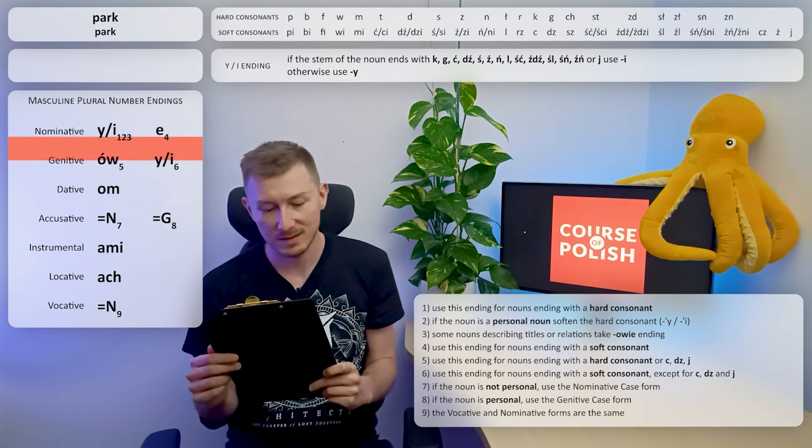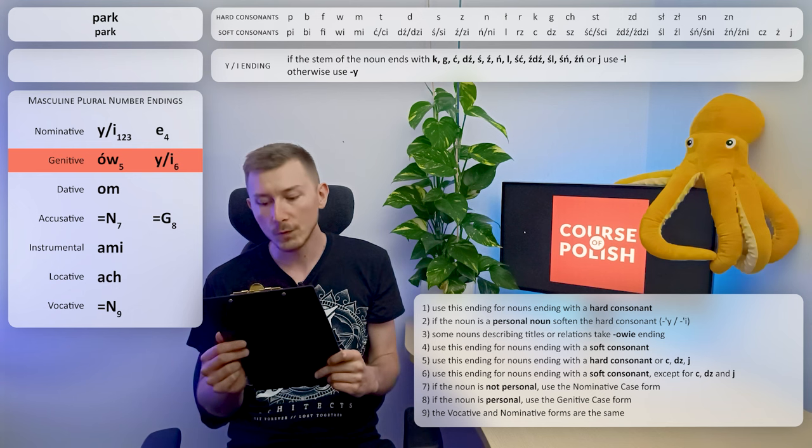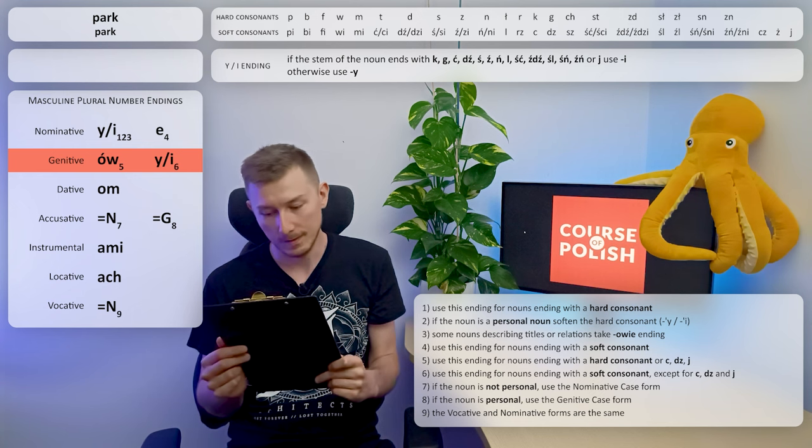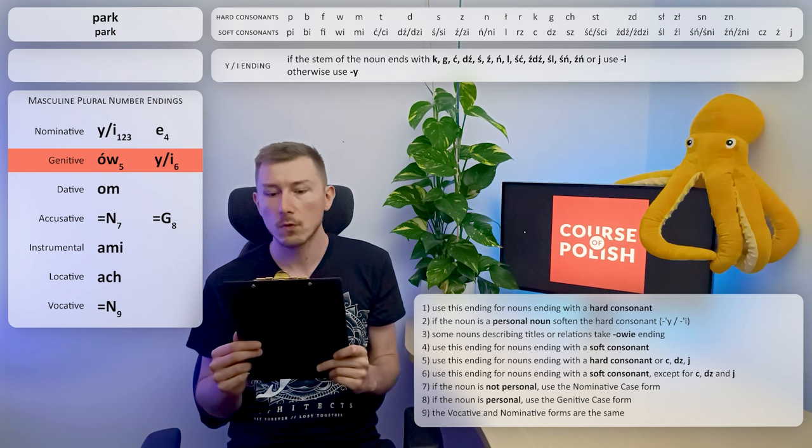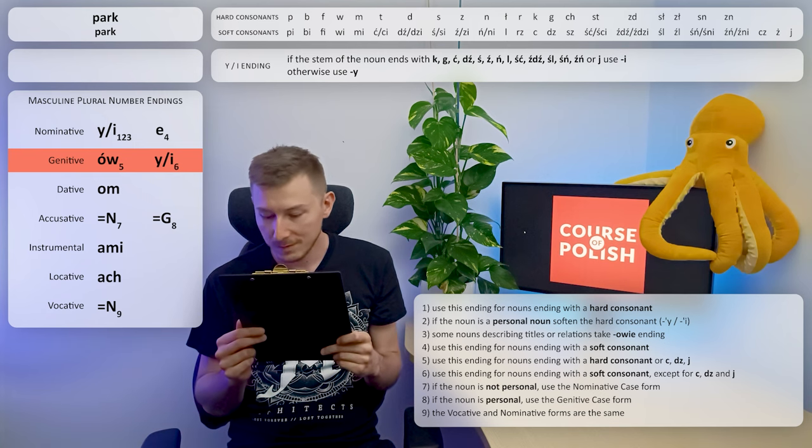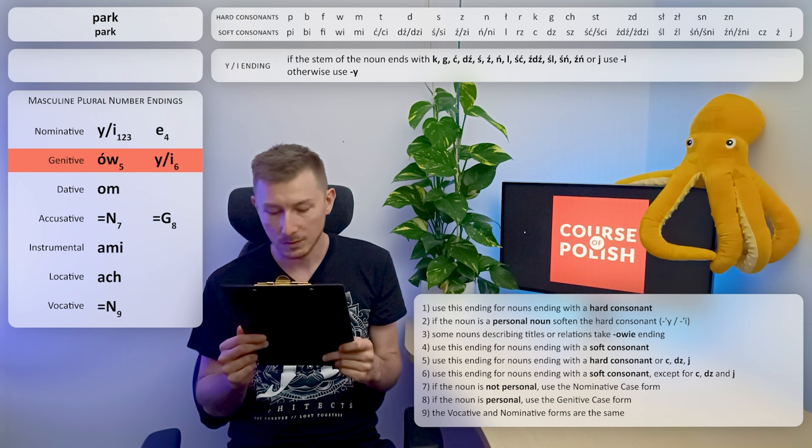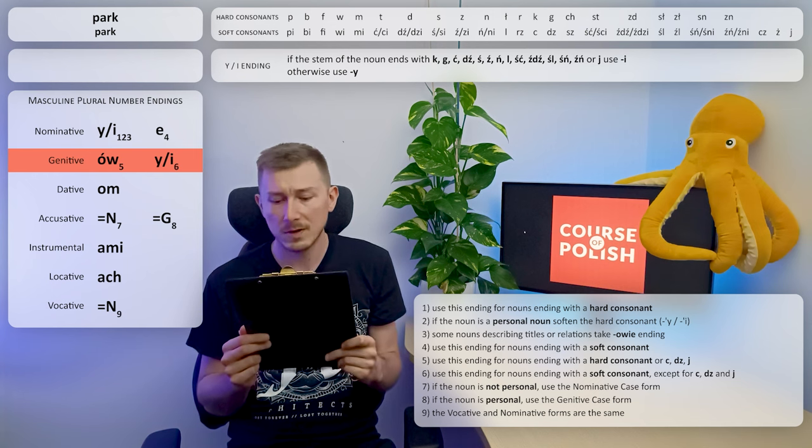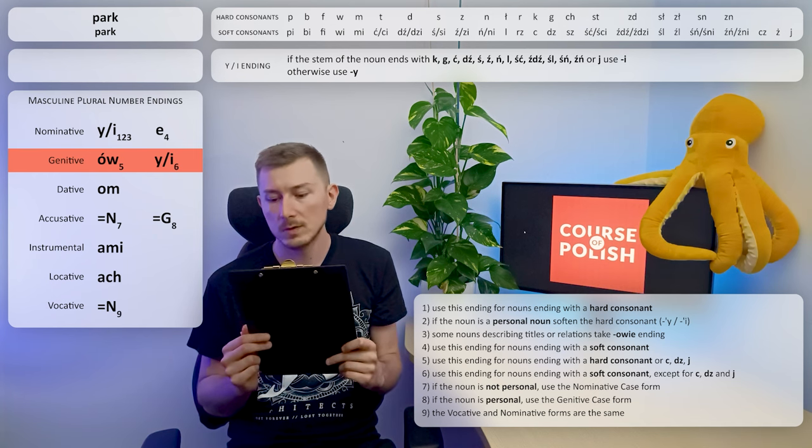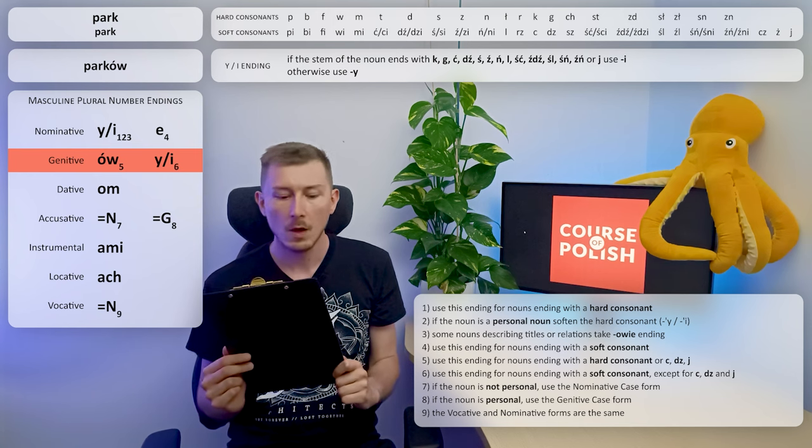Let's move to the second case, genitive. Again we have two options: ÓW or Y/I. Let's read the rule for ÓW: use this ending for nouns ending with a hard consonant or C, DZ, Ż. K is a hard consonant, so we have to use ÓW. The form will be PARKÓW.